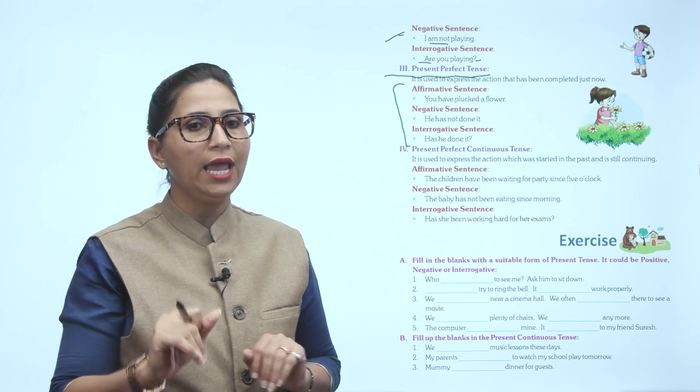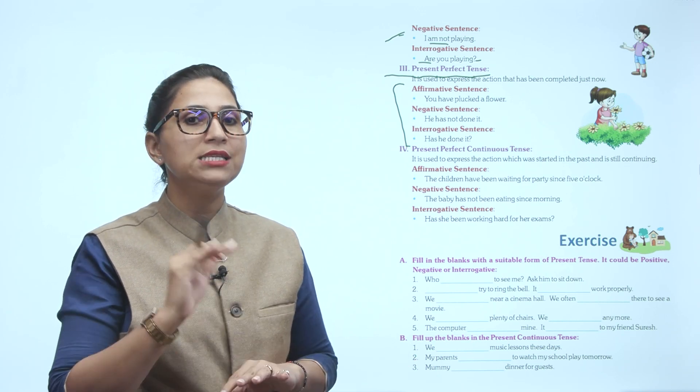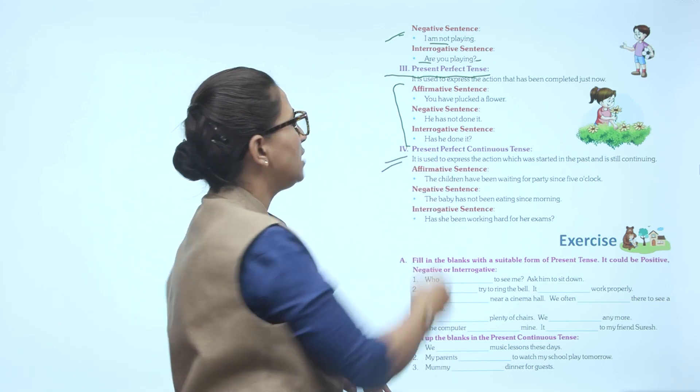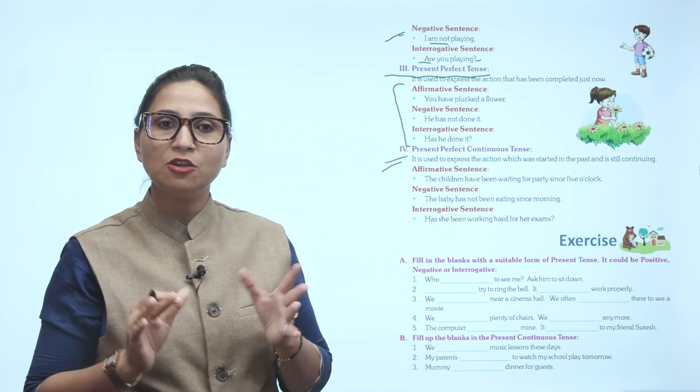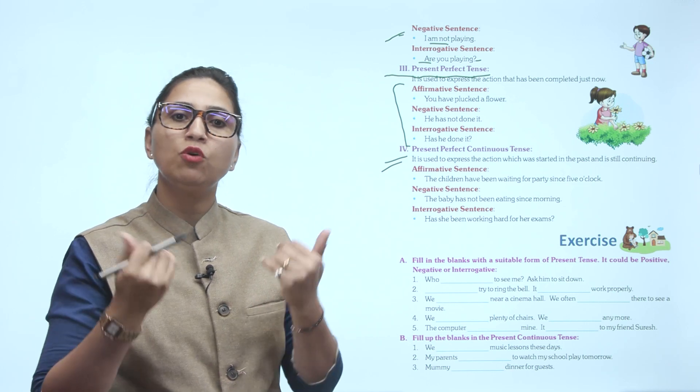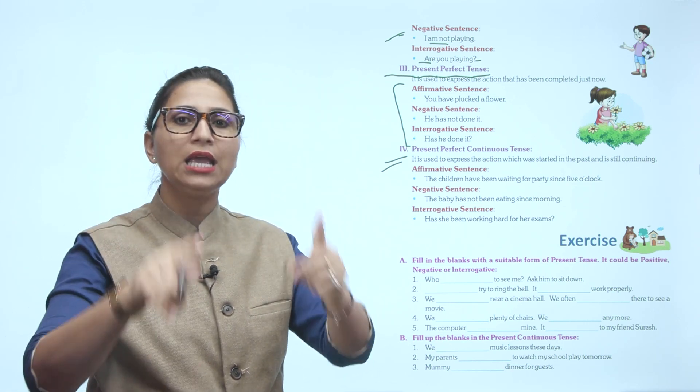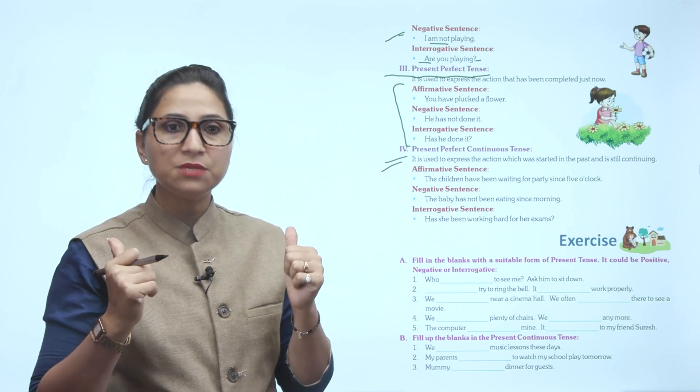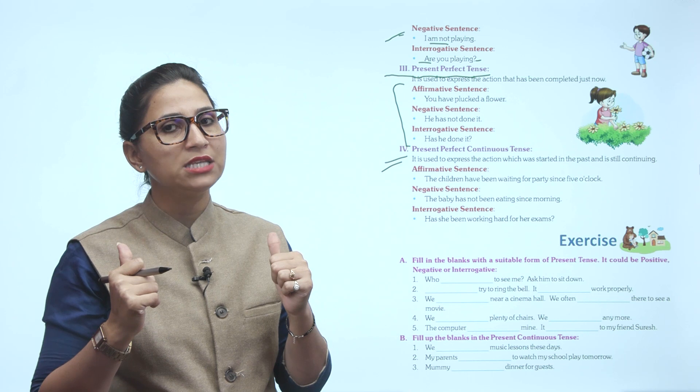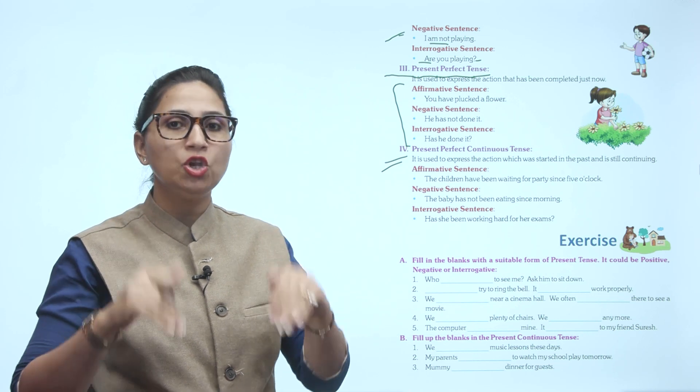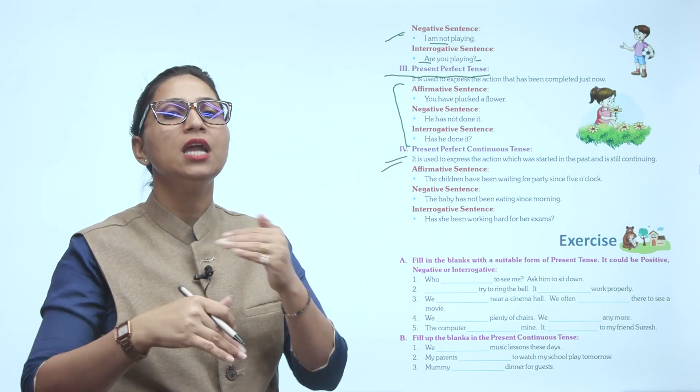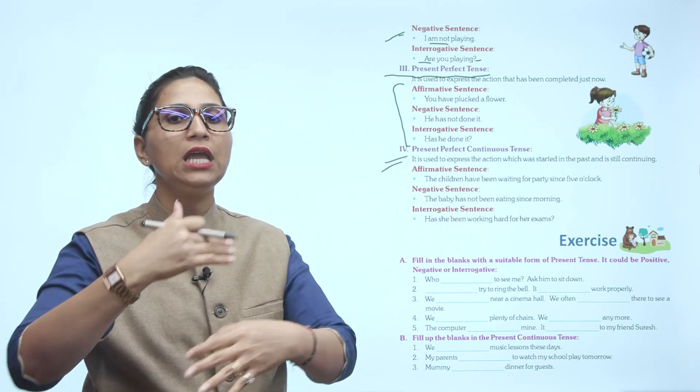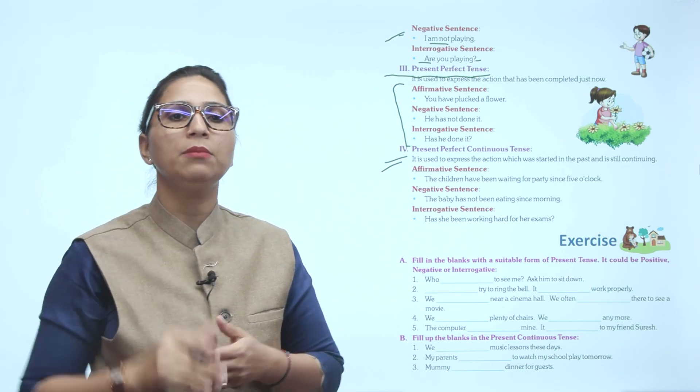Next is Present Perfect Continuous Tense. It is used to express an action which was started in the past and still is continuing. Your sentence started in the past, and you express that it is still continuing - that thing is still happening. It started in past time and still has connectivity.